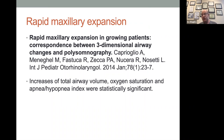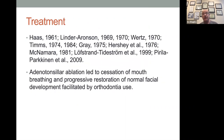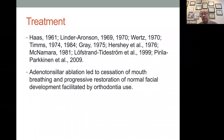Rapid maxillary expansion in growing patients gives a three-dimensional airway increase — it increases total volume, oxygen saturation, and decreases apnea-hypopnea indexes. Adenotonsillar ablation leads to cessation of mouth breathing and progressive restoration of normal facial development facilitated by orthodontics. Rapid maxillary expansion on its own at an early age may actually cause the adenoids and tonsils to shrink on their own. Once you've expanded a kid and they're three years old, it's very fast, and they are better surgical risks because they have a better airway.